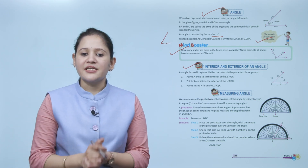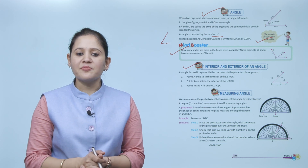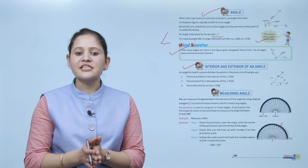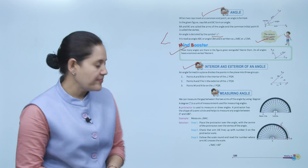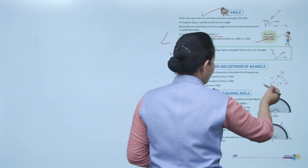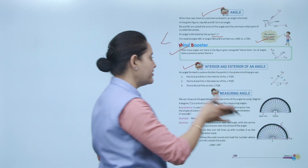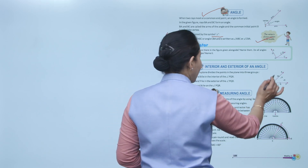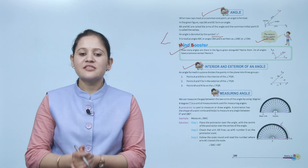An angle formed in a plane divides the points in the plane into three groups. Points A and B lie in the interior of angle PQR. Points X and Y lie in the exterior of angle PQR. Points M and N lie on the angle PQR.